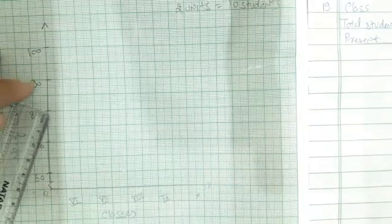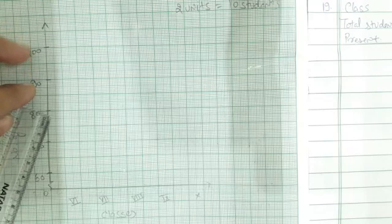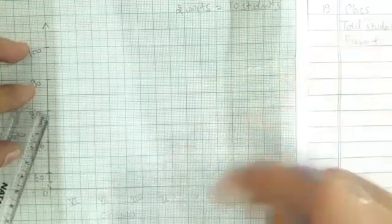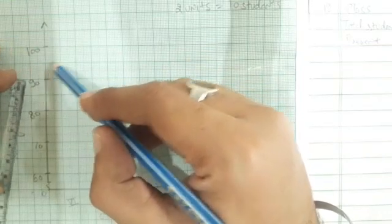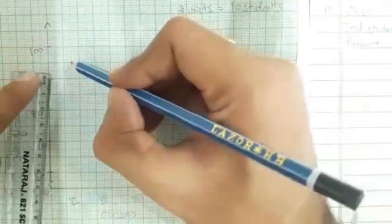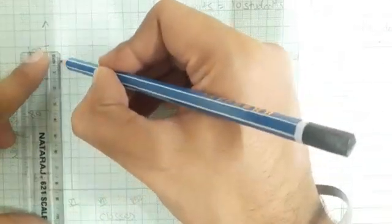95 is 5 more than 90, and there are total 20 divisions between 90 and 100. Since 20 divisions represent 10 students, to represent 5 students we have to take 10 divisions. So from 90 we will take 10 divisions and it will come at this dark line, which will represent 95. We take a width of 0.5 centimeters and from here to the base we draw the bar for total students.